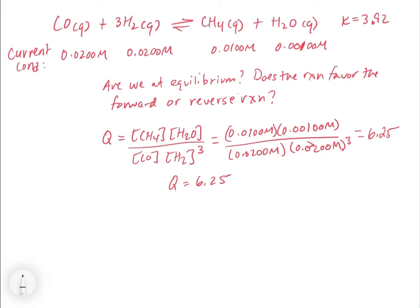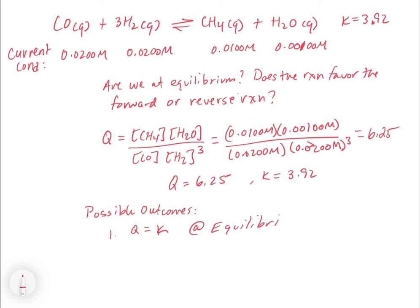We compare Q = 6.25 to K = 3.92. There are three possible outcomes. First, if Q equals K — for example if we had calculated exactly 3.92 — that tells us we are at equilibrium, because the concentrations we plugged in are in fact equilibrium conditions that reproduce the equilibrium constant.